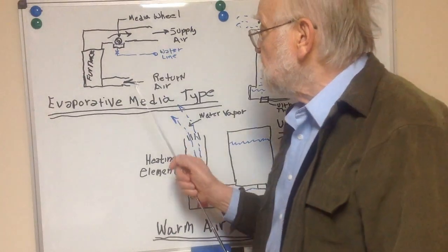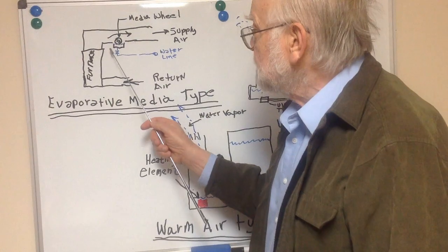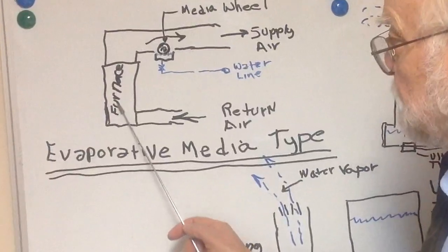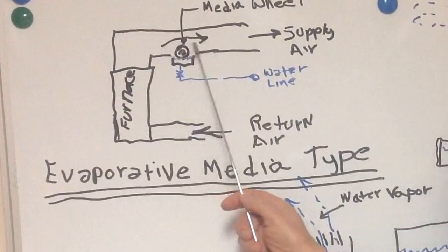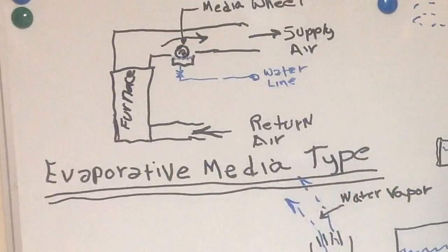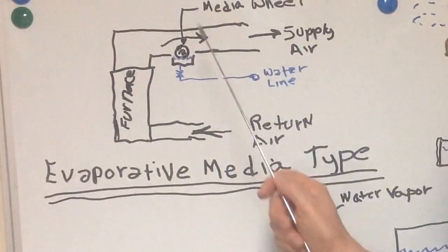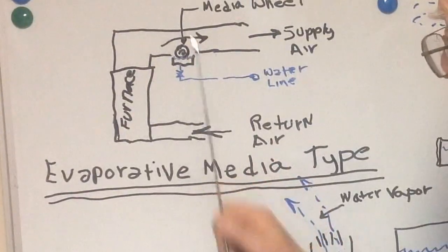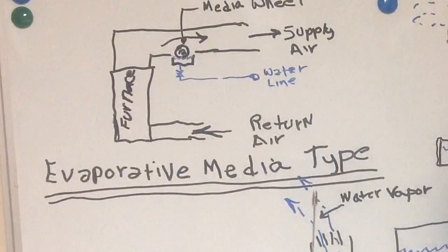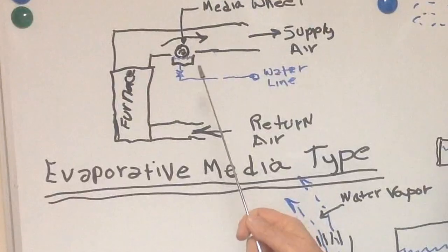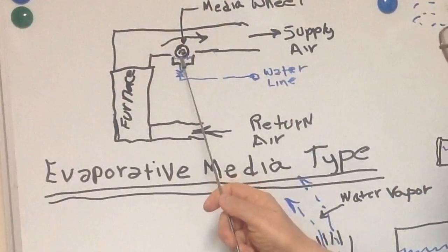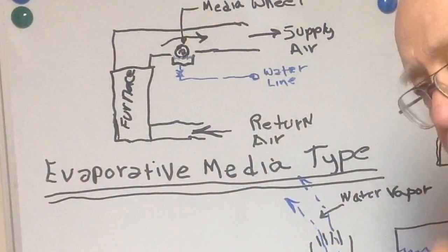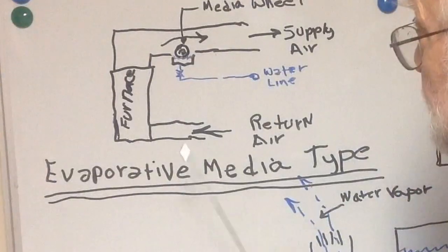The evaporative media type was a unit installed in the furnace ductwork. If this represents the furnace, with return air coming back in, the blower blowing heated air out into the discharge ductwork — this is the supply air into the house — a slot was cut in the bottom of the duct and the humidifier was inserted there.